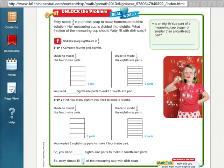So it says here, Patty needs 3/4 cup of dish soap to make homemade bubble solution. Her measuring cup is divided into eighths. So she needs 3/4, but her cup doesn't say fourths on it. It only says eighths. What fraction of the measuring cup should Patty fill with dish soap? So basically we need to change 3/4 into eighths. So we're finding how many eighths are in 3/4.